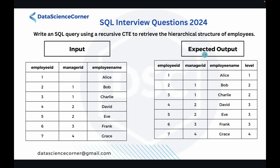In the expected output, we want employee ID, manager ID, and employee name along with the level. The levels represent the hierarchical level of the employee — for example, the CEO is at level one, and employees further down the hierarchy are at higher levels. We need to sort the output by level, and within each level, by employee ID.